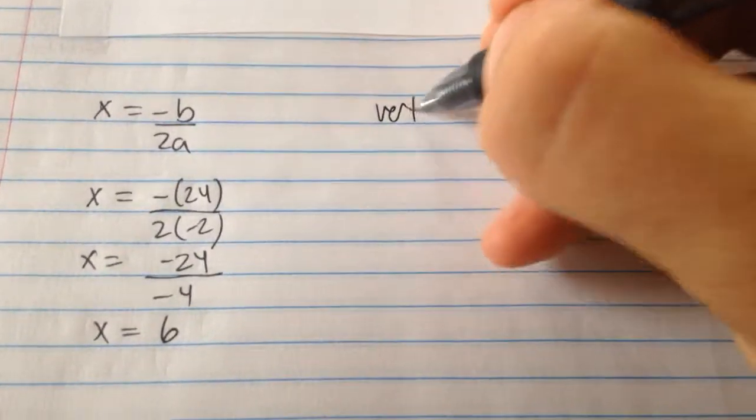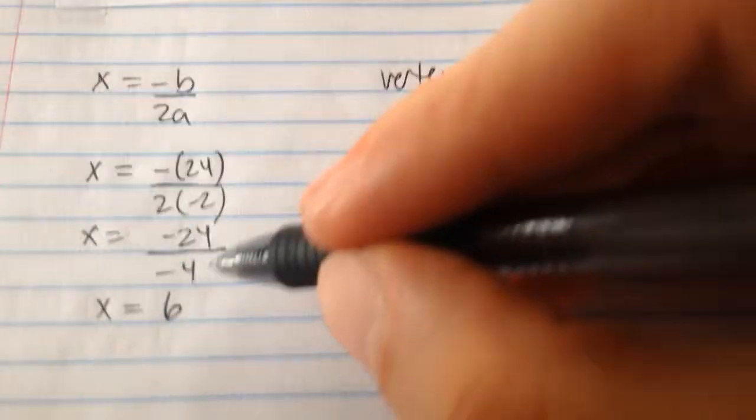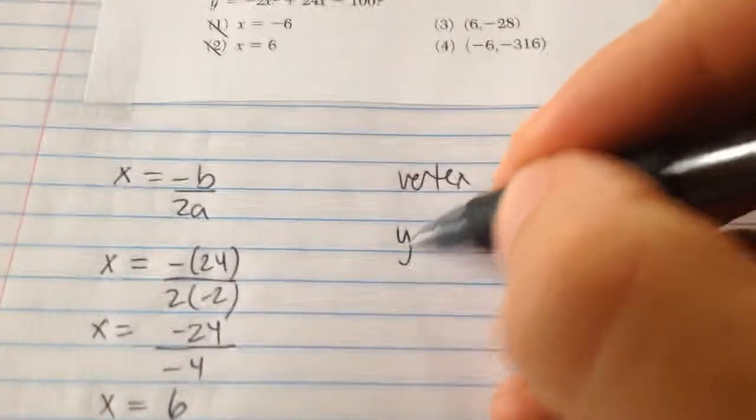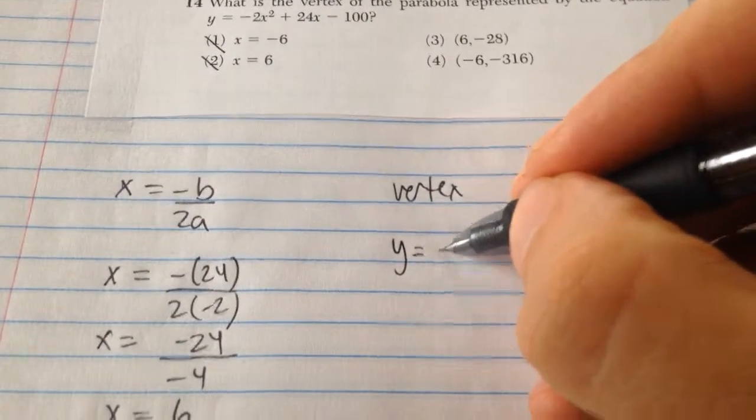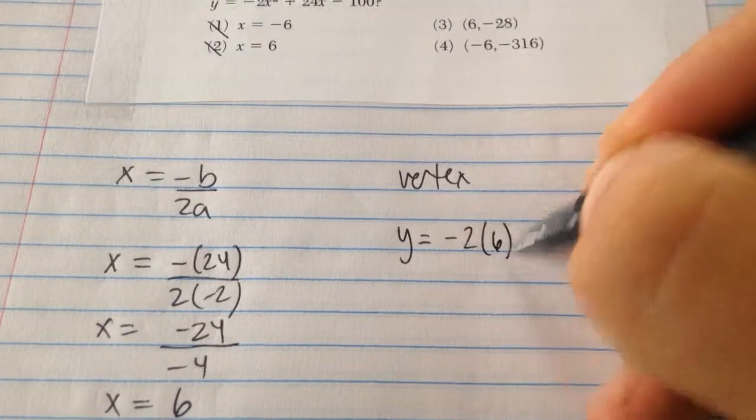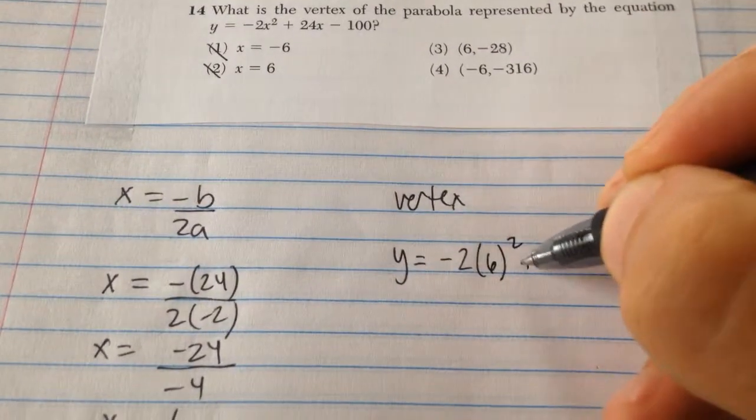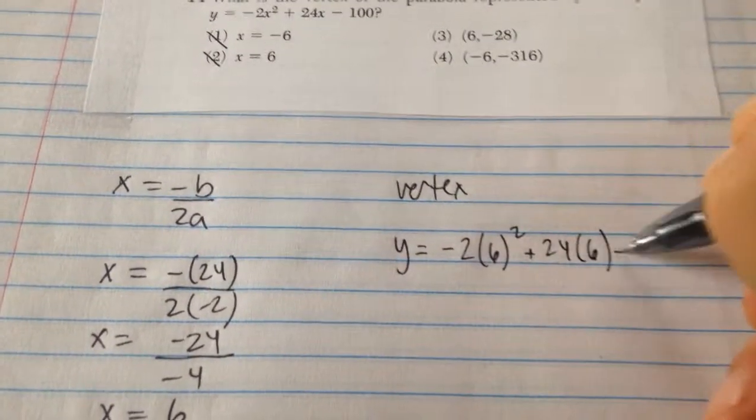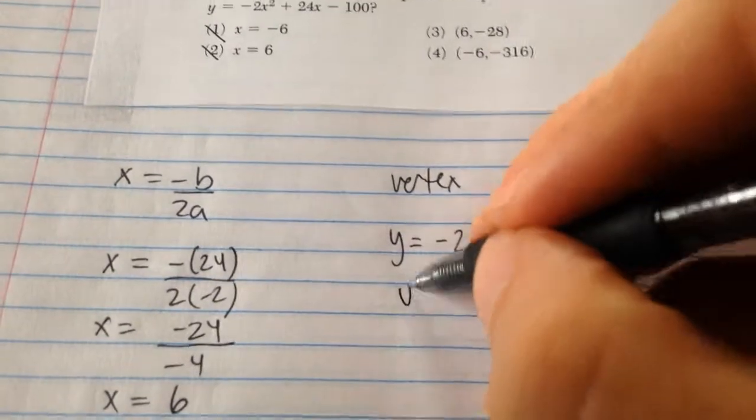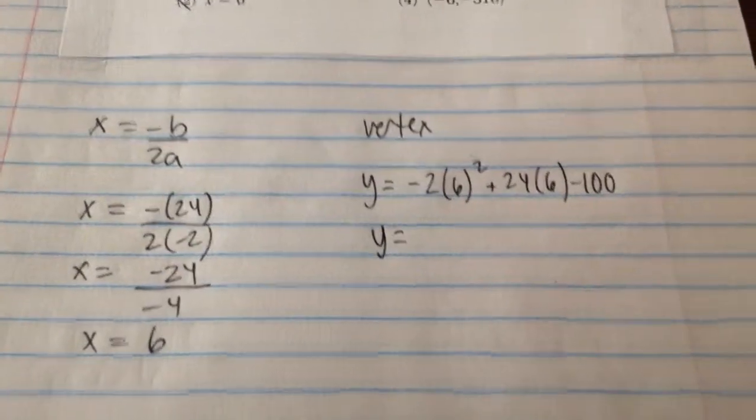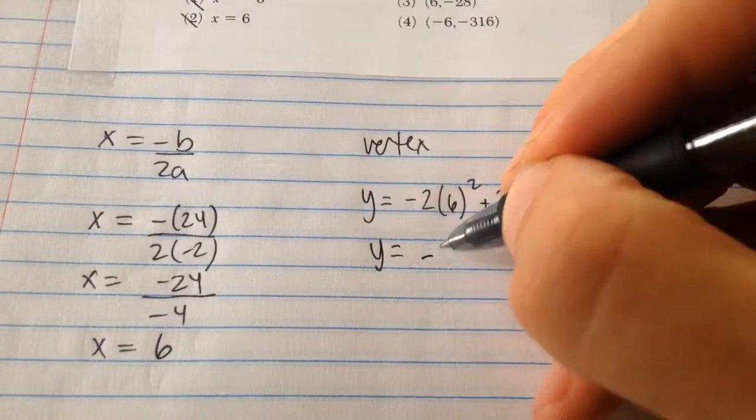To find the vertex, you take that x value and plug it into the equation, which is negative 2 times 6 squared plus 24 times 6 minus 100. After simplifying that, you get negative 28.